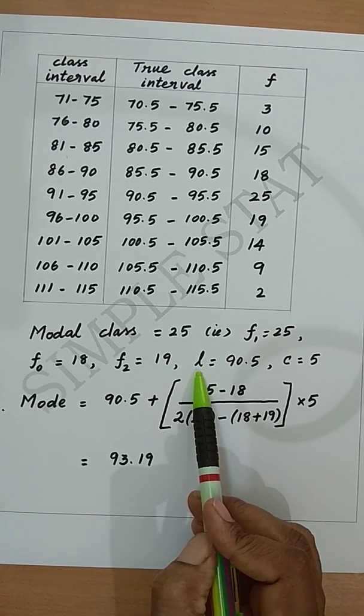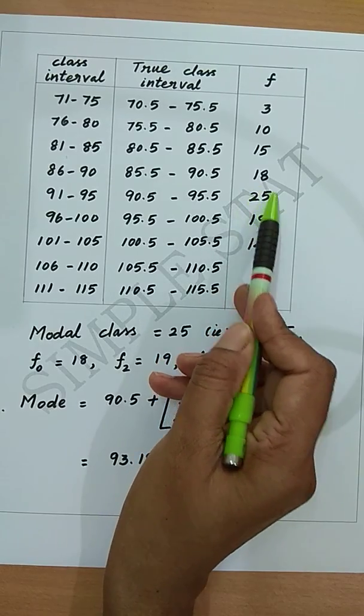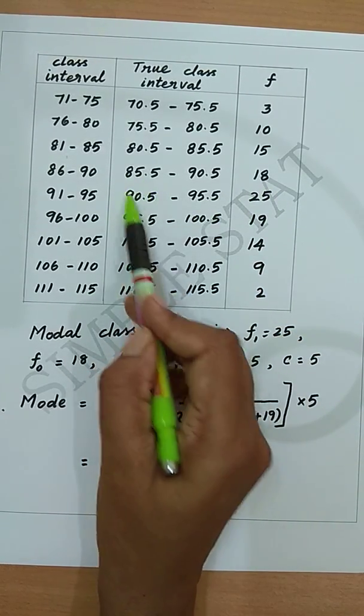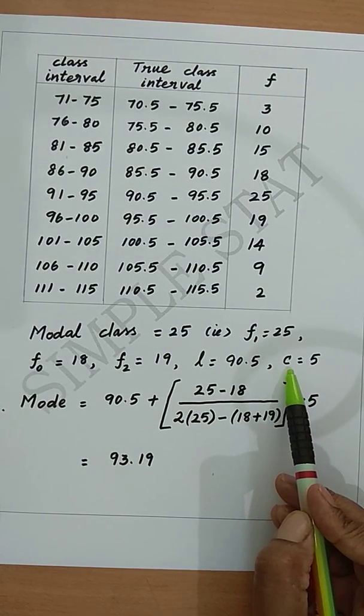Now get L which is lower limit of the modal class. The modal class is 90.5 to 95, lower limit of the modal class is 90.5. And get C which is width of the class interval. Here the width of the class interval is 5.